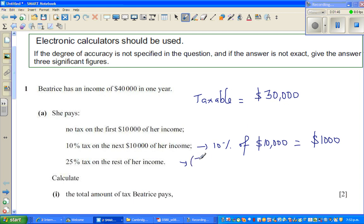First let's do that: $30,000 minus $10,000 is $20,000. So $20,000 you are paying 25% tax. 25% is a quarter. So basically you are finding quarter of $20,000.